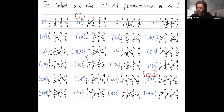Let's do the next four-cycle in cycle notation. This is saying one goes to three, three goes to two, two goes to four, and four goes back to one. We can match that up: one goes to three, which goes to two, which goes to four, which goes to one.